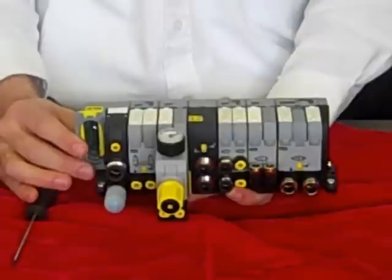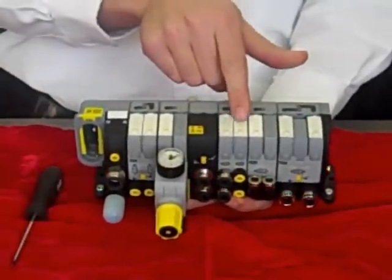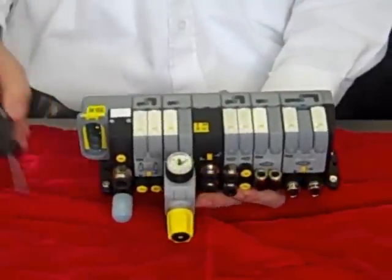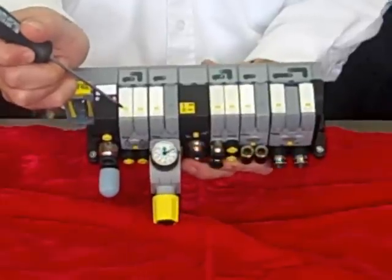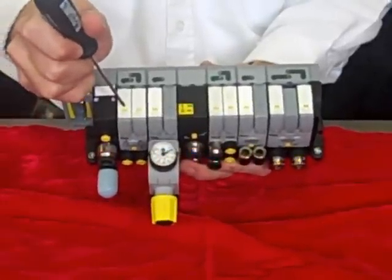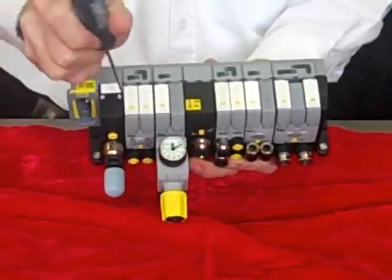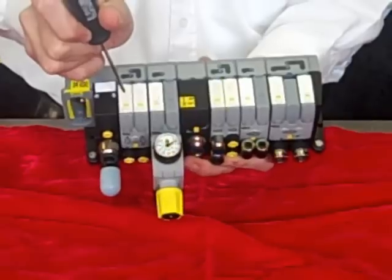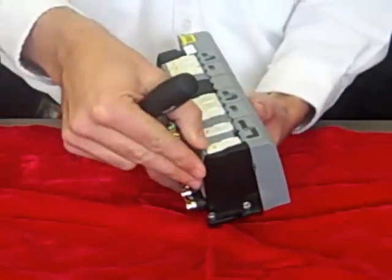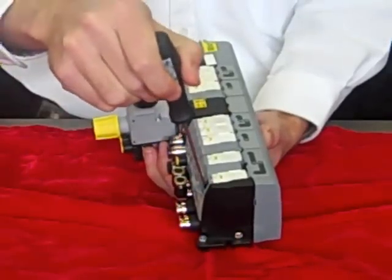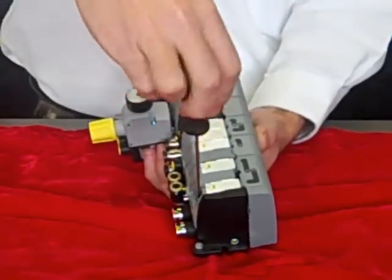The solenoids for the valves are conveniently located on the top of each valve. The yellow button is the manual override, which can either be pushed in for a non-locking override or pushed and twisted for a locking override. Also, this allows easy replacement of solenoids, again, simply with one screw.